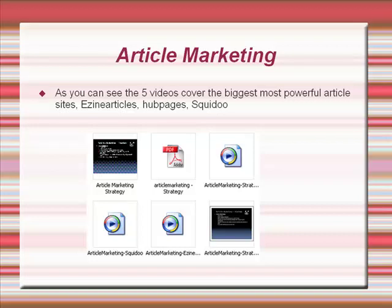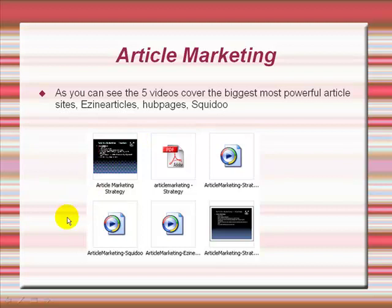The first module is article marketing and as you can see the five videos cover the biggest, most powerful article sites: Ezine Articles, Hubpages, and Squidoo. These domains have excellent power in Google, which is why we're going to focus on them.